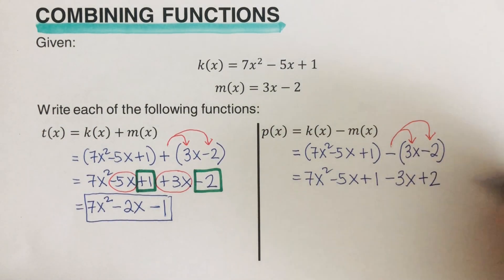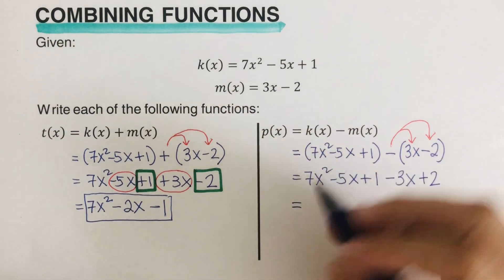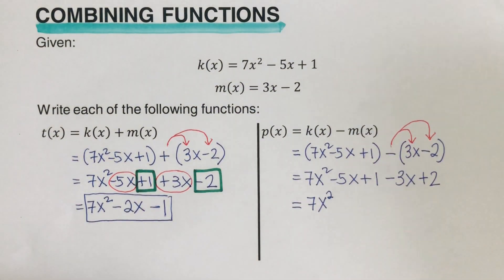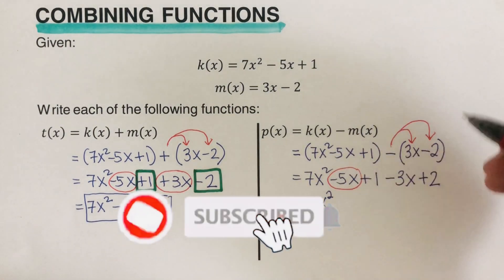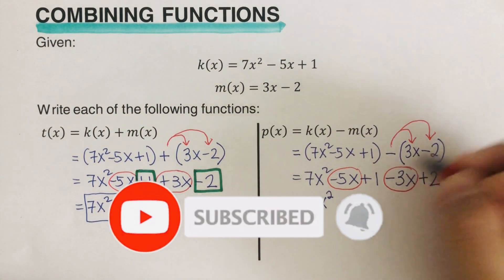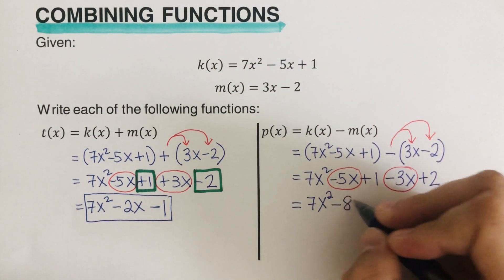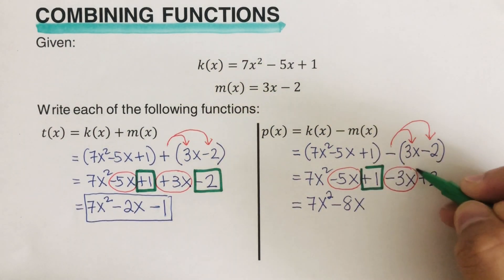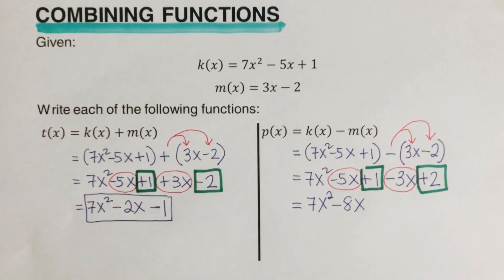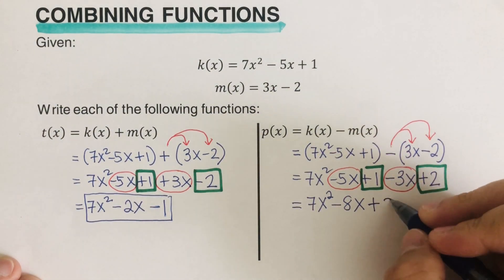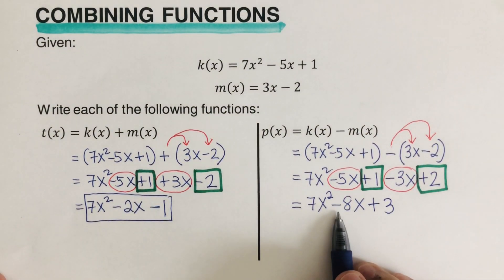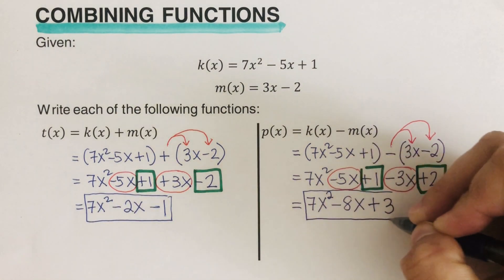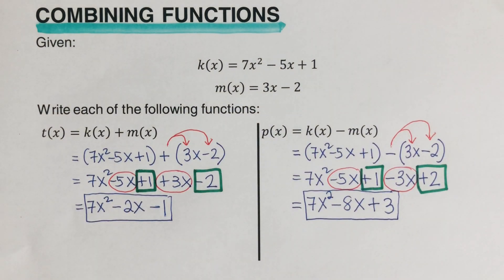This comes out to 7x squared minus 5x plus 1 minus 3x, because negative times positive is negative, and negative times negative is positive 2. Combining like terms: 7x squared stays, negative 5x minus 3x is negative 8x, and 1 plus 2 is 3. So p of x equals 7x squared minus 8x plus 3.